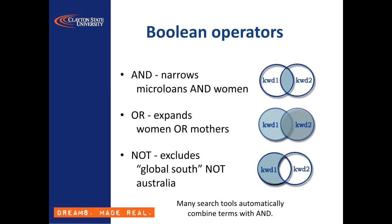By contrast, OR expands your search. If you have two terms and you really don't care which of them are present, you can include both by using OR. This is useful if you want to look for related or synonymous terms, or if a word has variant regional spellings and you want to include both versions.